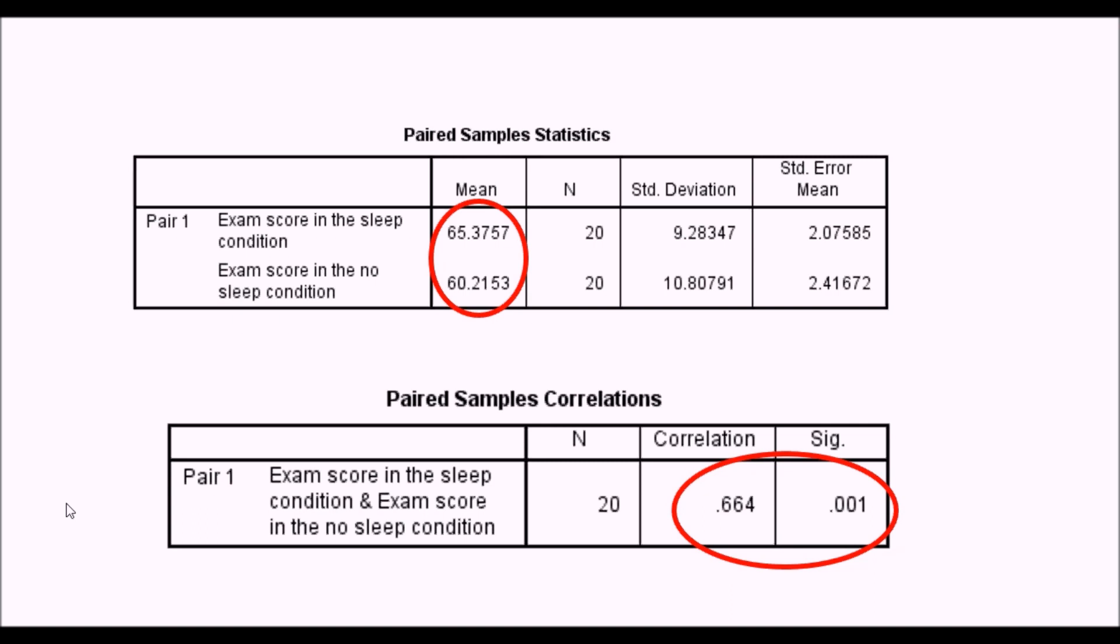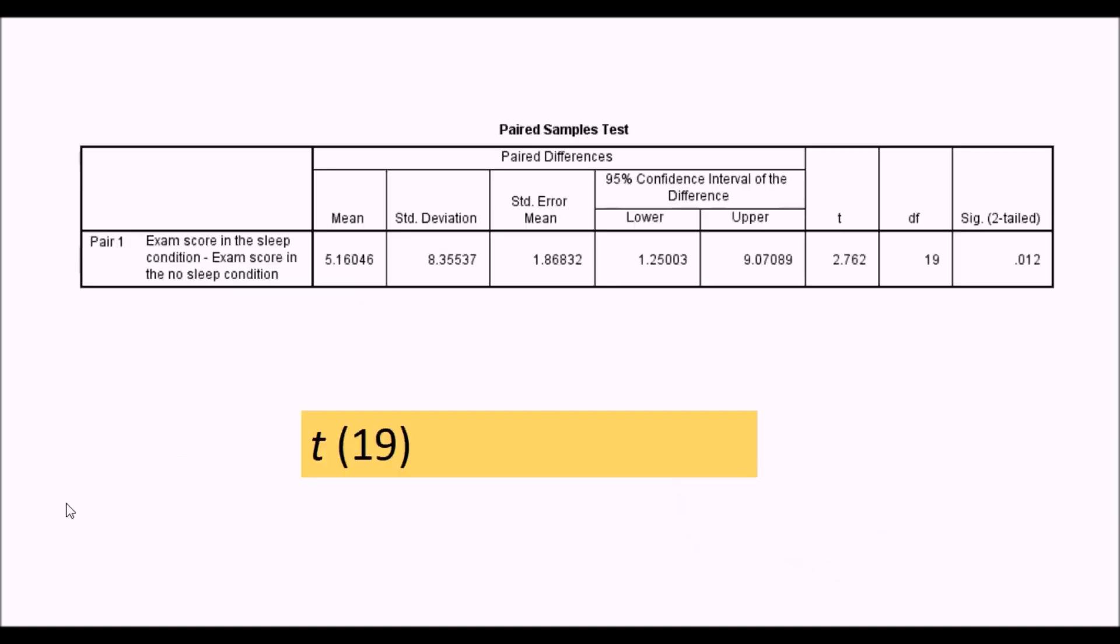We'd expect an association to be occurring here, and in fact, this is what we found for this example, where the data between the two conditions was correlated at 0.664, which was significant. But we don't need to worry too much about that. We'll go on now to the next table, paired samples test, which gives us the results of the t-test.